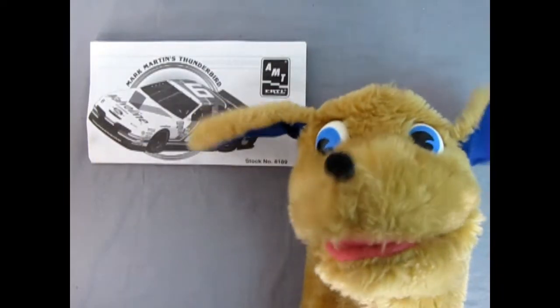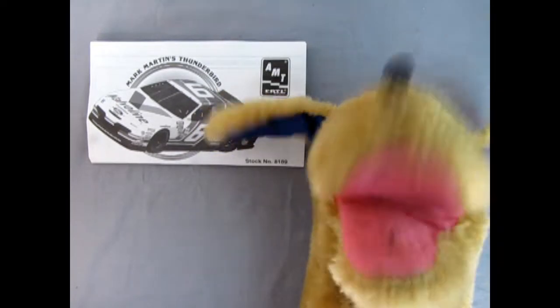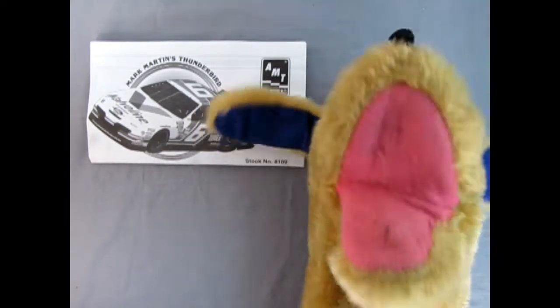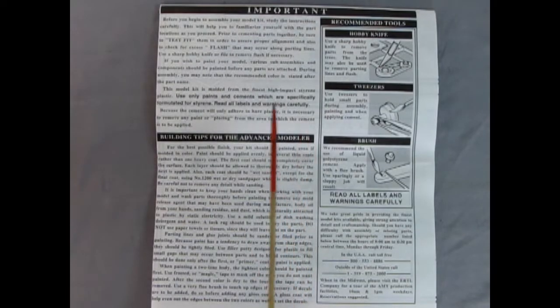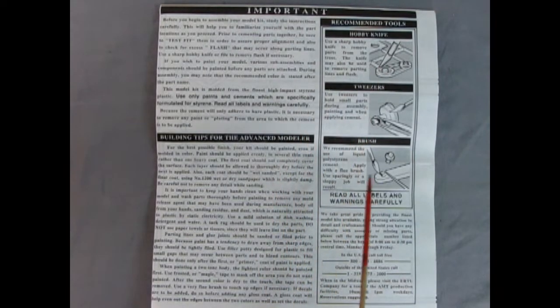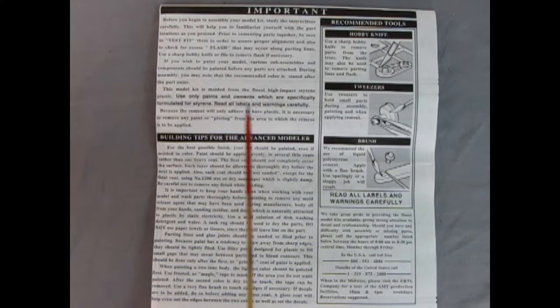Hello everybody this is Danny the dog, your dog on the street, and today we're looking at Mark Martin's Valvoline Thunderbird NASCAR kit. Now when we open up the instruction sheet a little bit we can read this wonderful history all about Mark Martin and his amazing Thunderbird. And on this side of the sheet we can also see the tools we're going to need and the tips for the advanced modeler and the before you begin to assemble read this part of the instruction sheet.